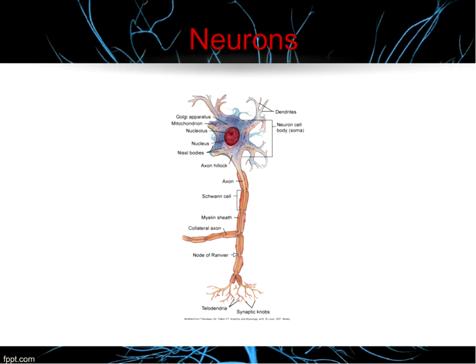Regardless of which neuron we're talking about, there are three things neurons always have in common. First, excitability — the ability to generate a nerve impulse. Second, conductivity — the ability to transmit an impulse. And finally, influence — the ability to influence something else, whether that's other neurons, muscle cells, or glandular cells, by transmitting the impulse to them.